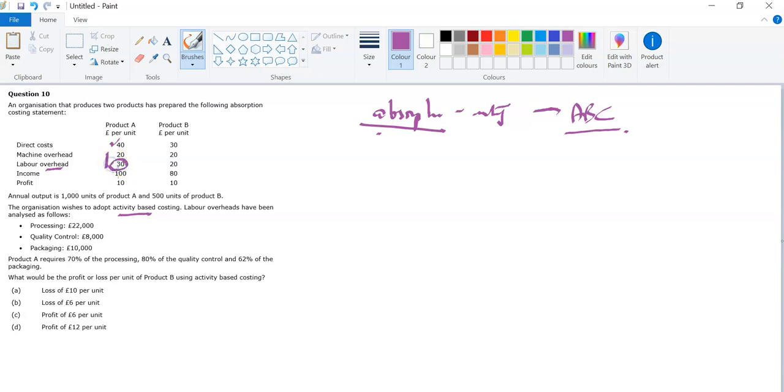Look at this labor overhead: it's 30 pounds per unit. So the actual full labor overhead is 30 times 1,000 plus 20 times 500. This must be the total labor overhead. Here I have 30,000, here I have 10,000, and when I add these together my answer is 40,000. If you add these three things together, you get 40,000.